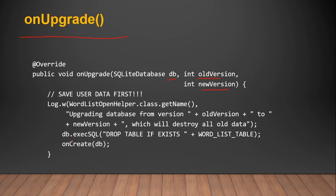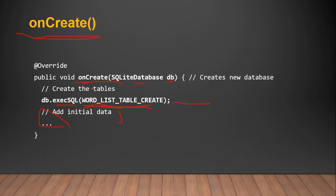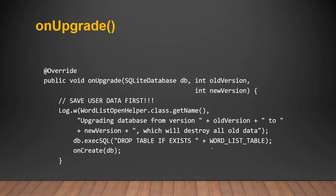Call db.execSQL and pass parameters like DROP TABLE IF EXISTS, word table. This method will drop your database if it exists. Always use SQL operations inside a try-catch block. After that, call the onCreate method again and pass the db object — this will recreate the table for you. This demonstrates the concept of dynamically writing code.